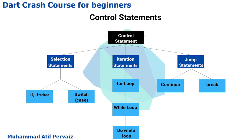In jump statements we have two parts: continue and break. For example, if I want to print numbers from 1 to 100 but want to break the loop at a specific number like 50, I will use the break statement — it will break the loop. The continue statement is used to continue the loop. This is the main introduction about control statements in Dart. In upcoming videos we will discuss how we can use these statements in our Dart programming.